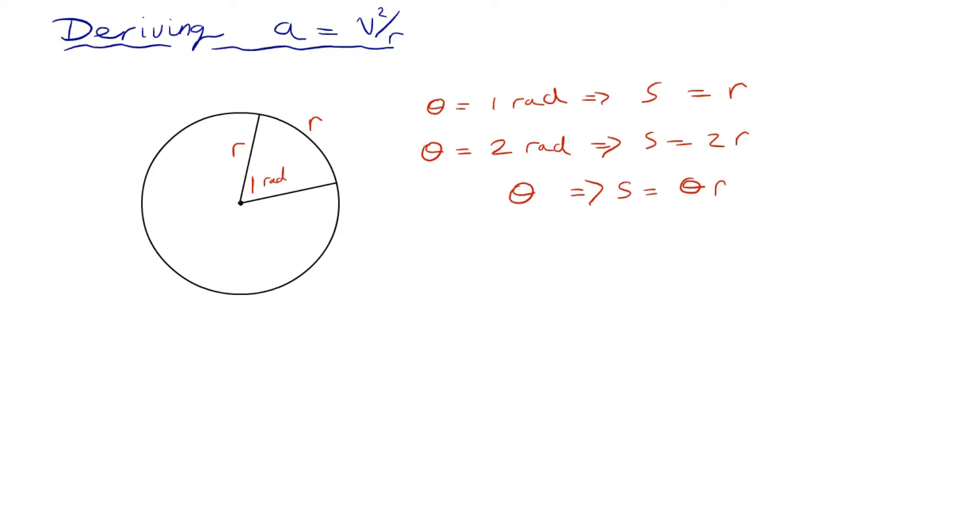And of course, if that looks a little bit confusing, well, let's just try it. Let's try it for two pi radians. Well, two pi is all the way around the circle. So when theta equals two pi, let's just put an example,